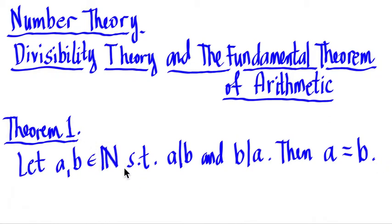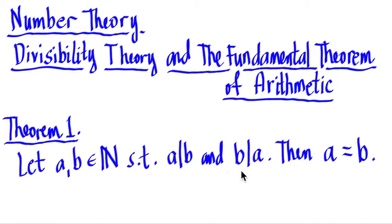Theorem 1 states that: let a and b be in the natural numbers — that is, they are positive integers — such that a divides b and b divides a. If this is true, then a is equal to b.